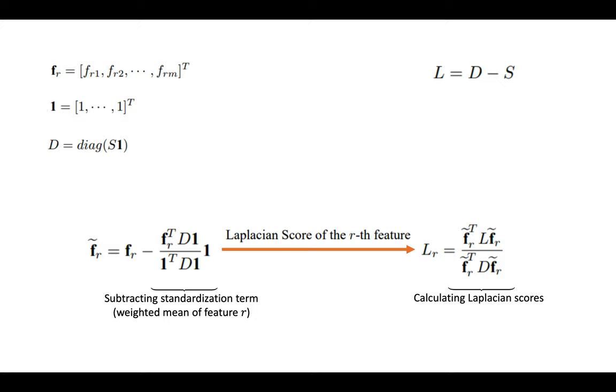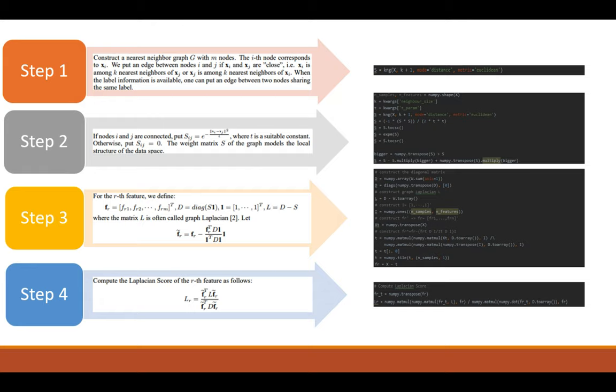And there are the steps, and the corresponding code parts. For constructing the graph, we use Euclidean distance, then create the S matrix, then the D matrix. And at the last step, we compute the Laplacian score.